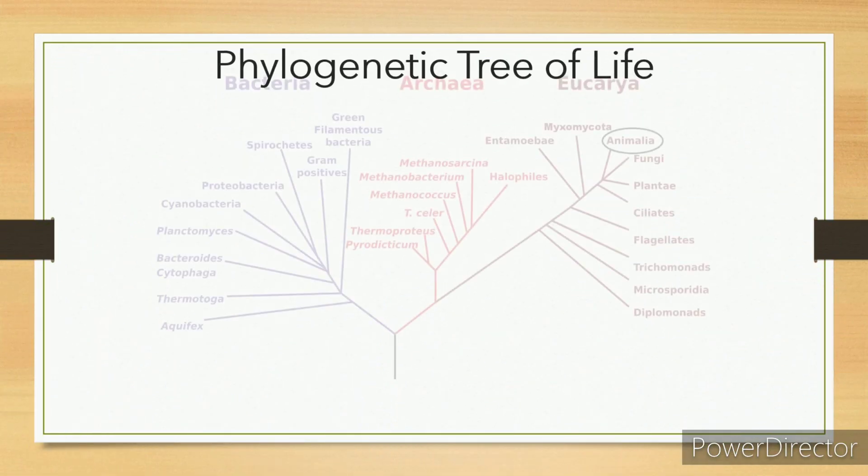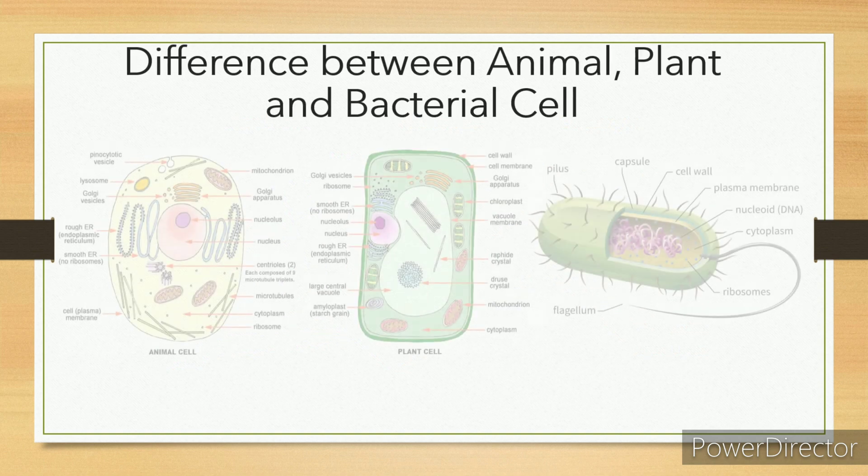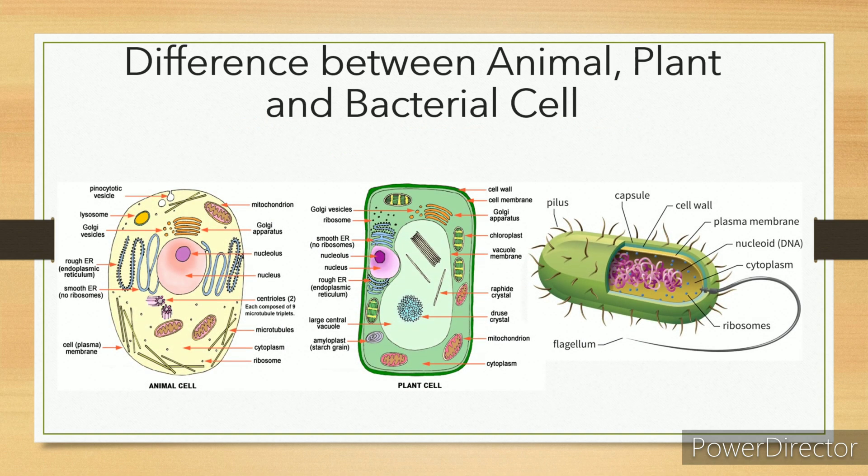Phylogenetic Tree of Life. Here in this image, you can see the phylogenetic tree of life. Difference between animal, plant, and bacterial cell. Here in these diagrams, you can see the difference between animal, plant, and bacterial cell.